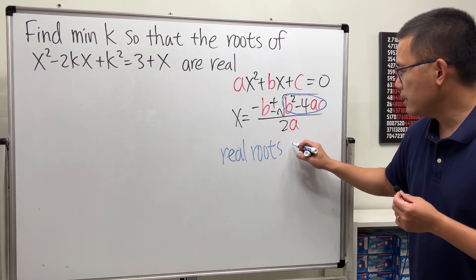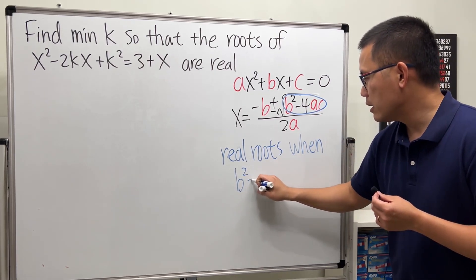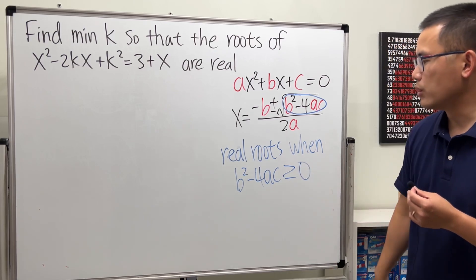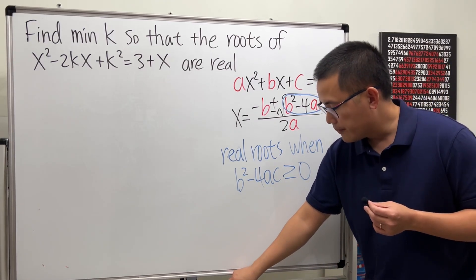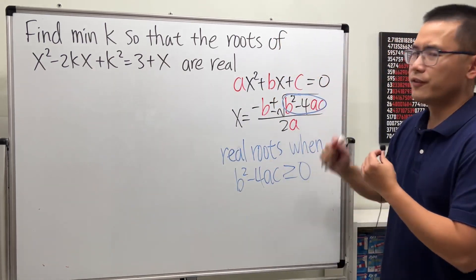That's the case when this part, b² - 4ac, is greater than or equal to zero. And this right here also has a name, it's called the discriminant. Well, let's go ahead and put this into the standard form, and then we'll use the discriminant.